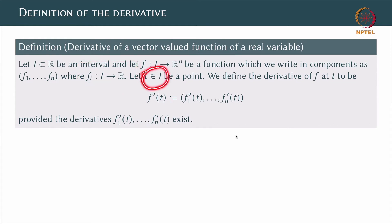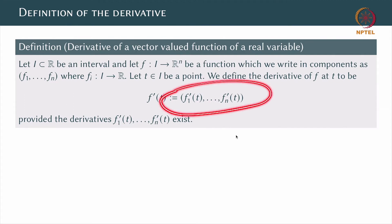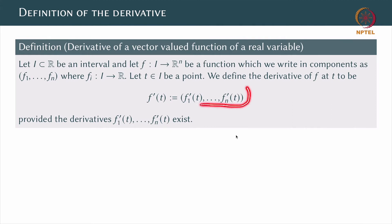Fix a point t in I. We want to define the derivative of the function f at this point t. We define the derivative to be quite simply the vector whose component functions are nothing but f1 prime of t, f2 prime of t, dot dot dot, fn prime of t. So, to differentiate a vector valued function of a scalar variable, just differentiate each one of its components.